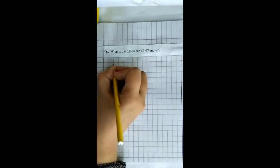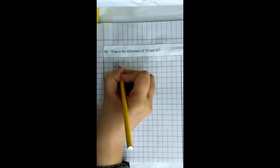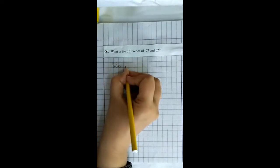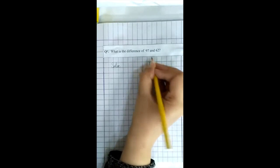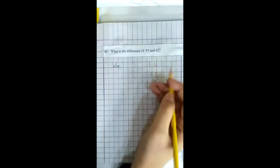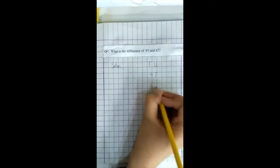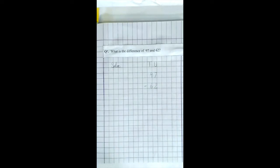Now we start from here. Write here solve. Put the sign of colon. Skip five blocks: one, two, three, four, five. Write here TU. Now we write here ninety-seven and sixty-two. Put the sign of subtraction. ہم minus کا sign put کریں گے. Use color.